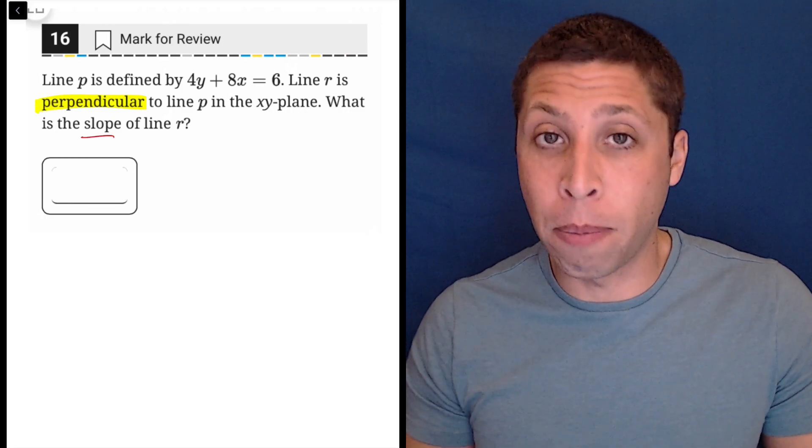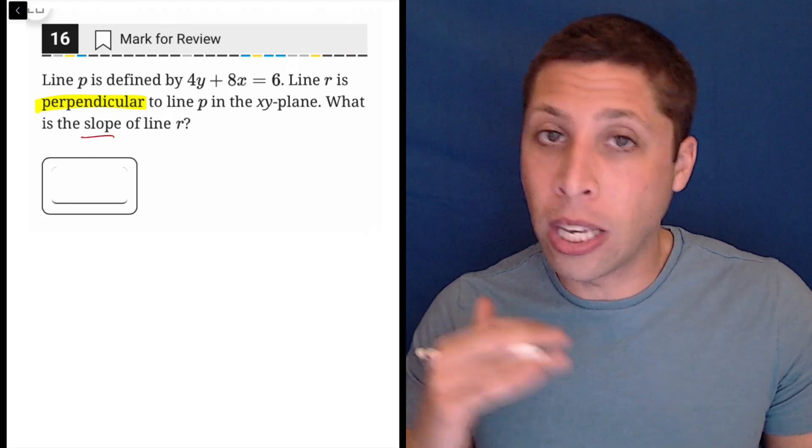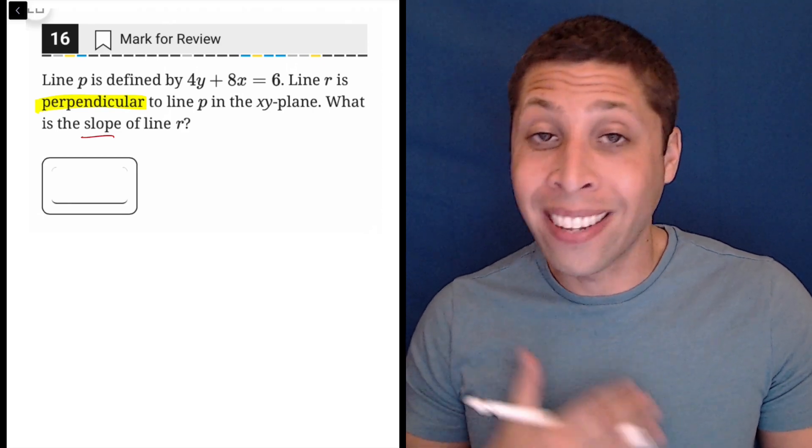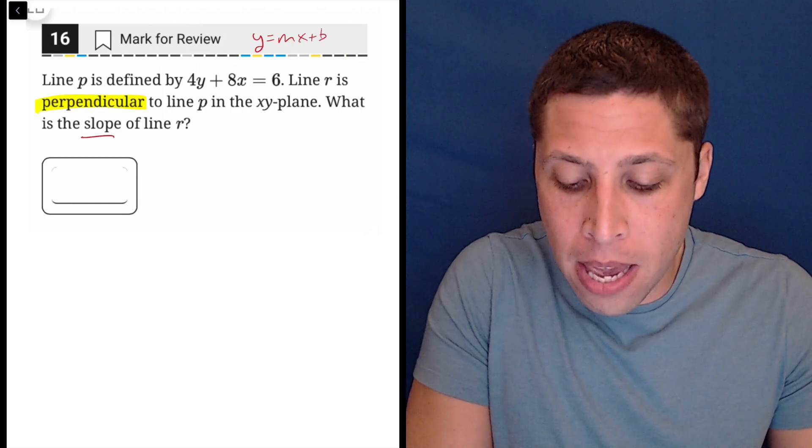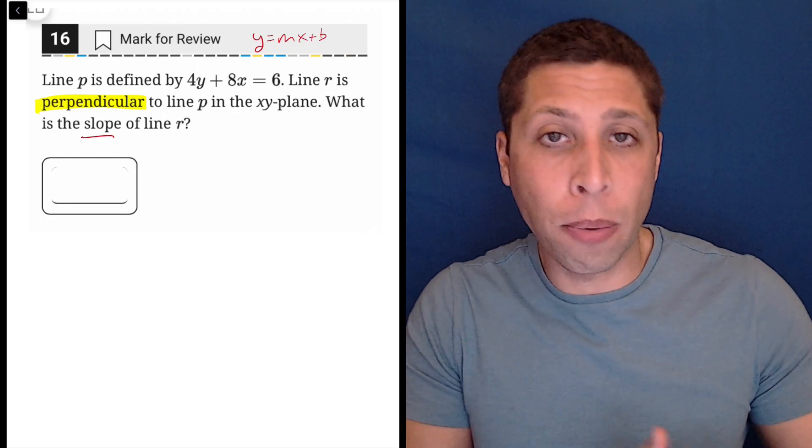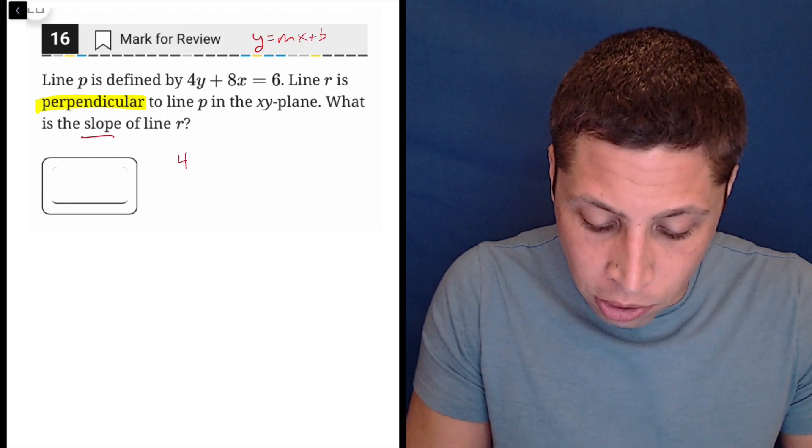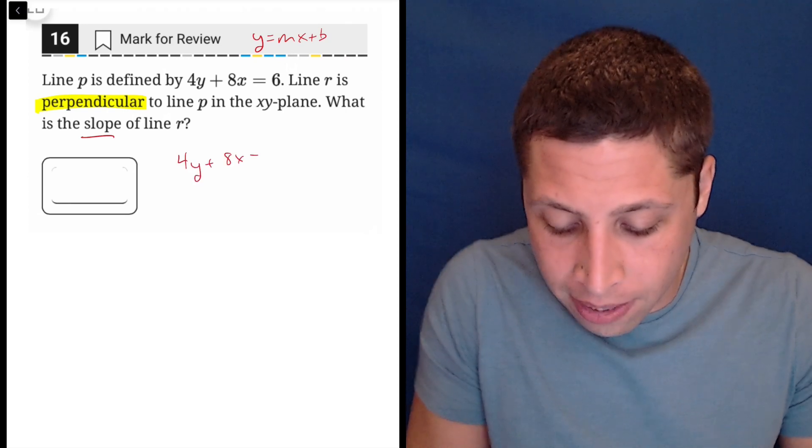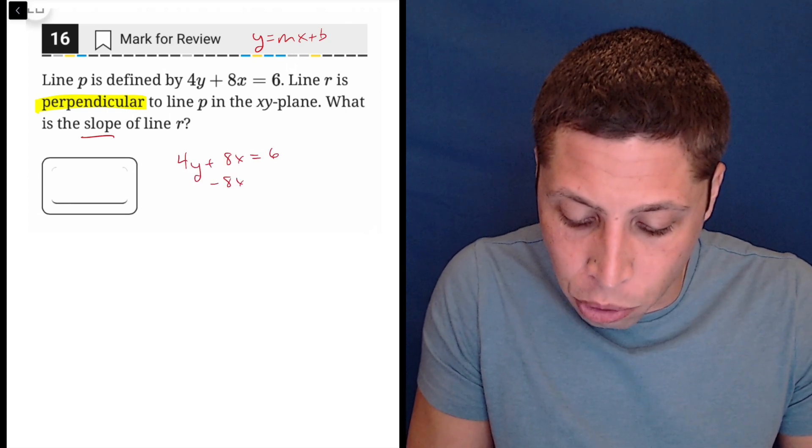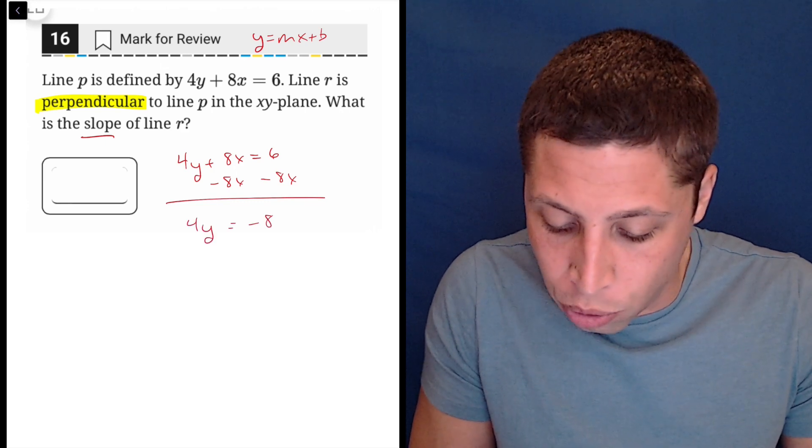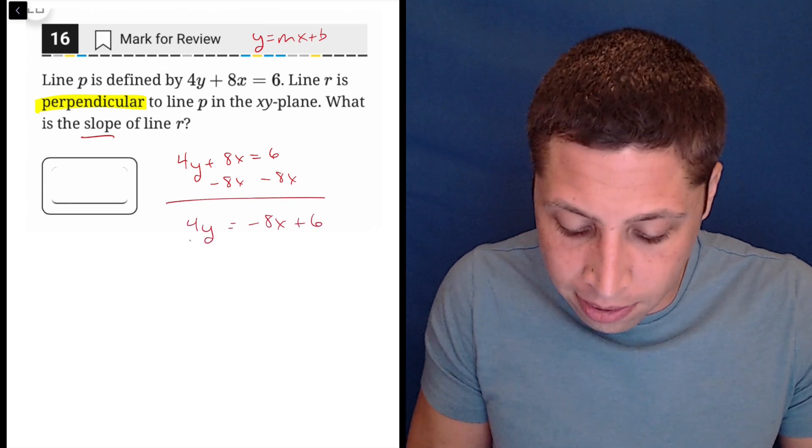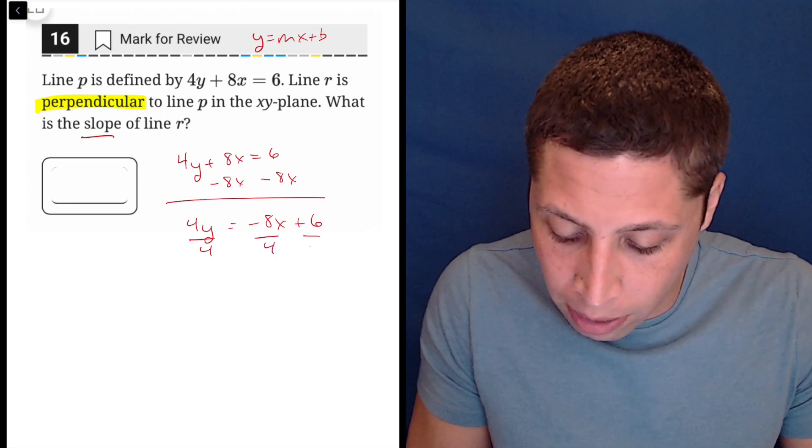So the first step would be, let's take the line that we know, 4y plus 8x equals 6, and convert it into y equals mx plus b so that we can understand the slope of that line in a more coherent way. So 4y plus 8x is 6. I would subtract 8x from both sides. I would get 4y equals negative 8x plus 6, and then I would have to divide everything by 4.